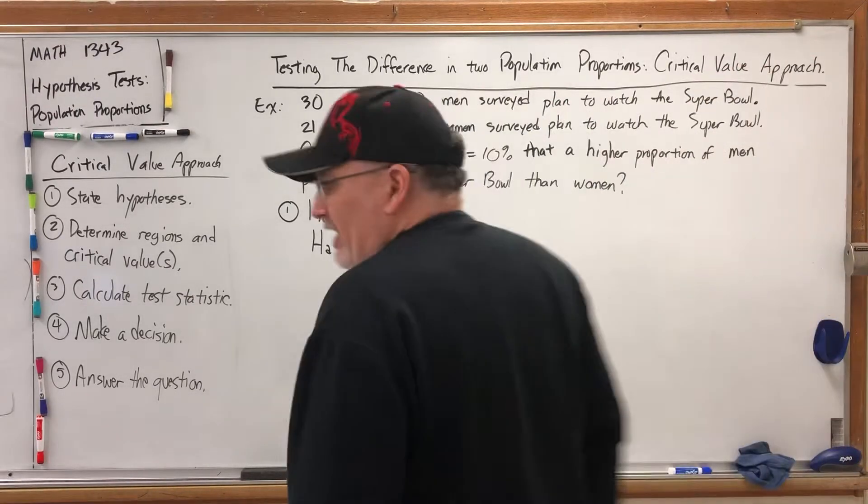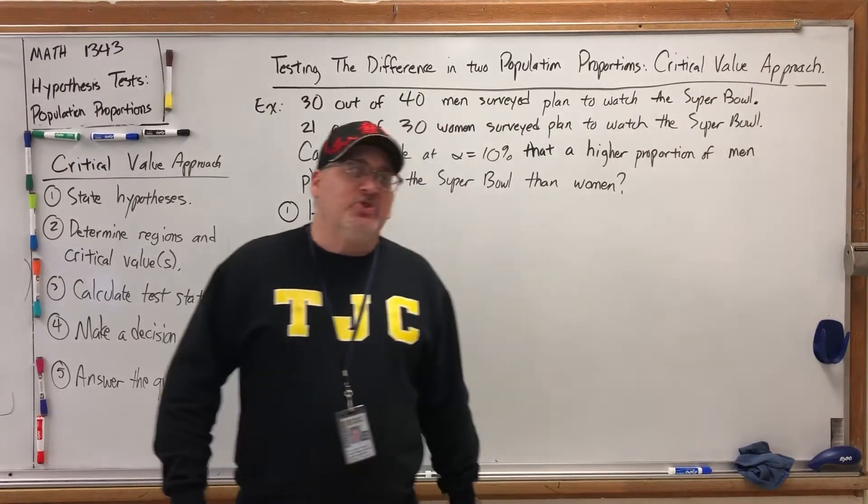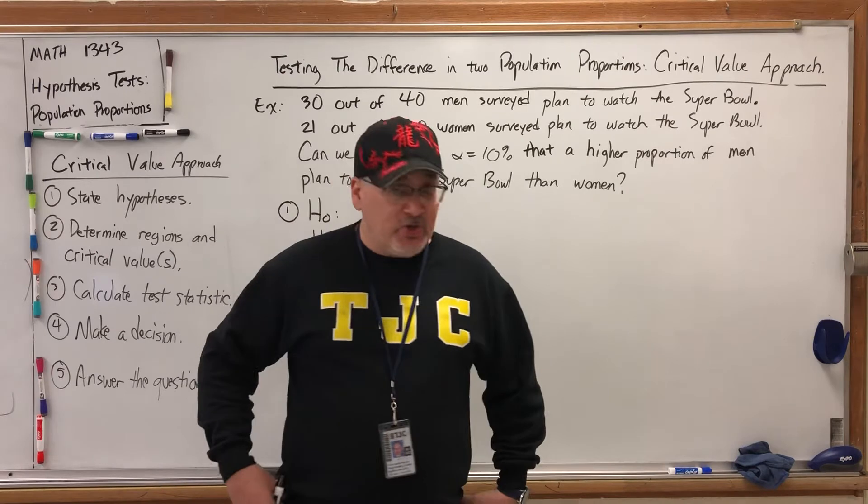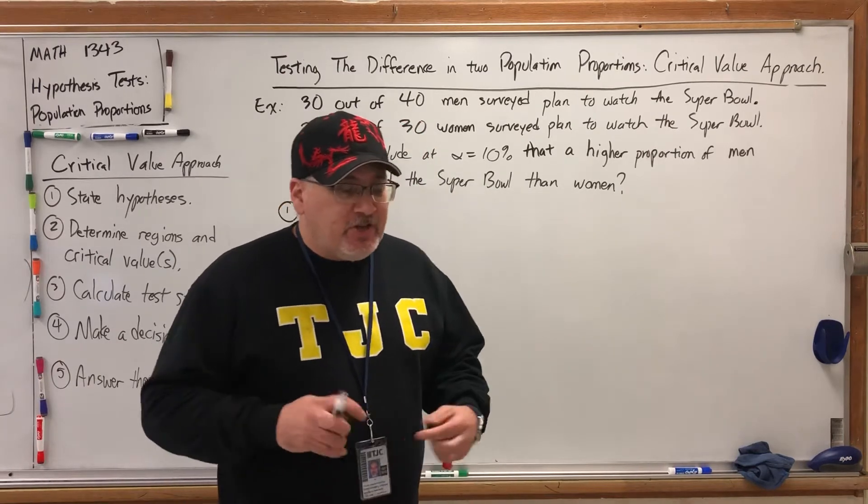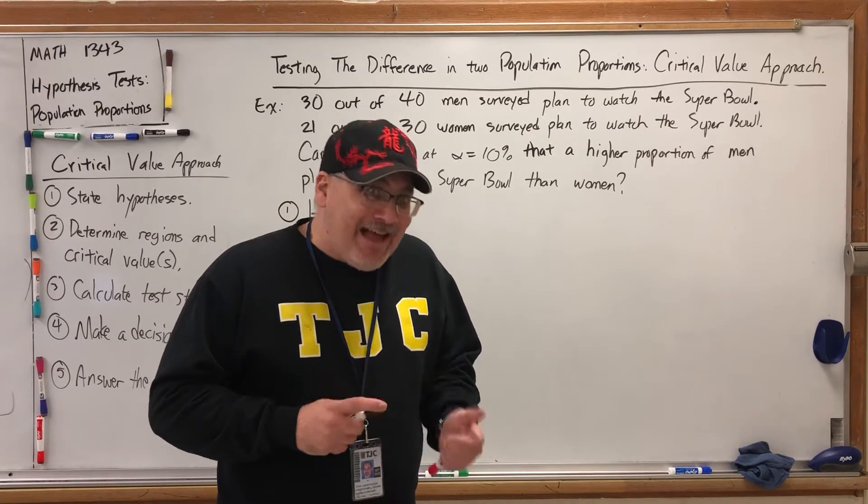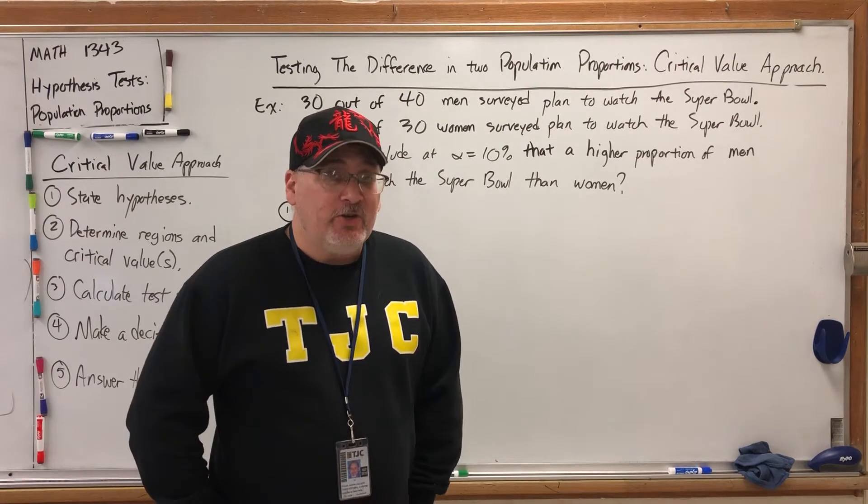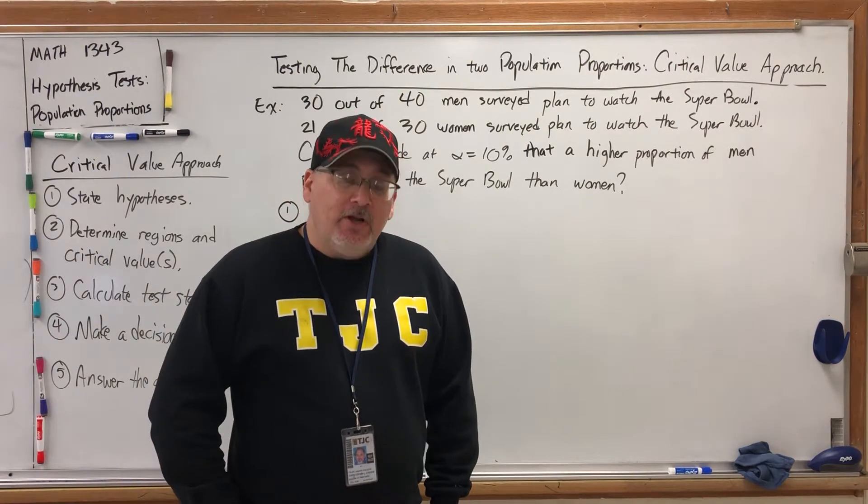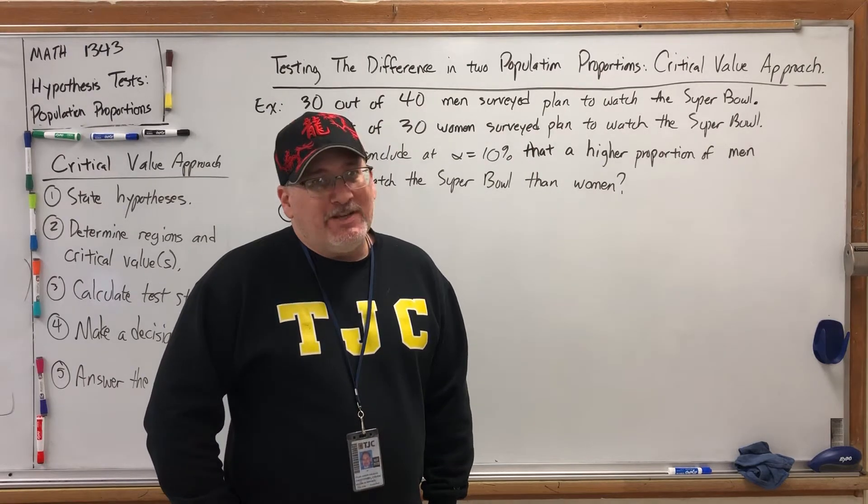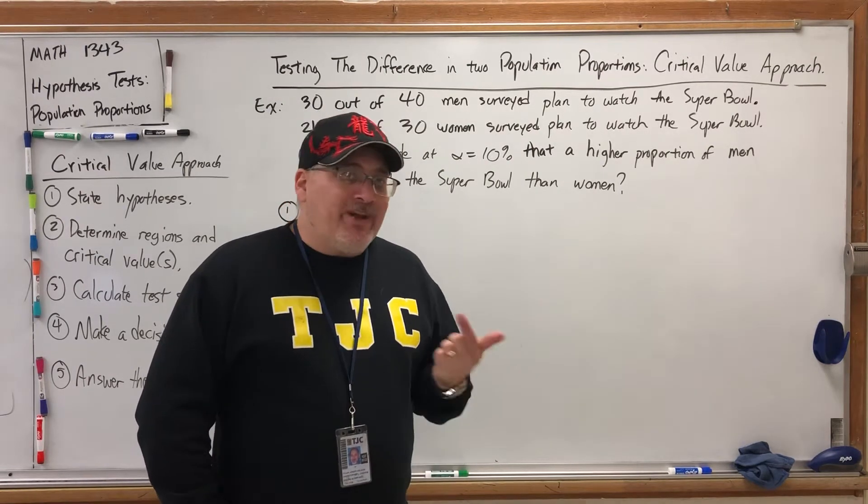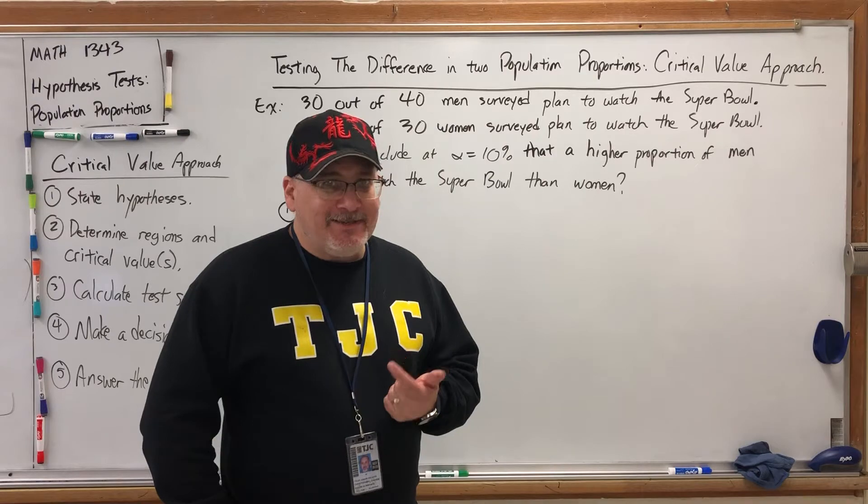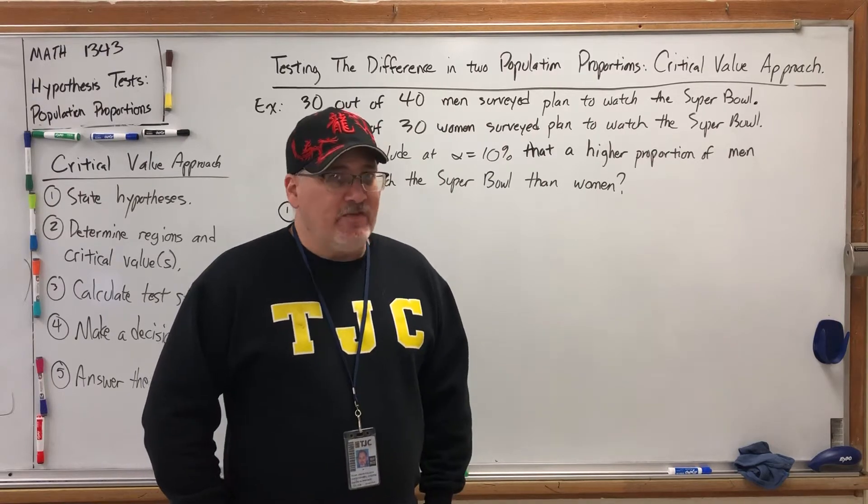I'm only going to do one example of testing the difference in two population proportions using the critical value approach because the flow of it is almost exactly like testing one population proportion using the critical value approach. There's only two places where we really have to make some minor changes. Number one is in the statement of the hypotheses, and number two is in the calculation of the test statistic.